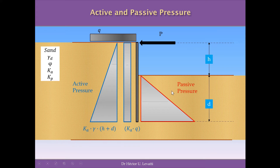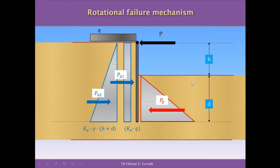Remember, we have two types of passive pressure: we have the passive pressure in equilibrium, and we have the maximum passive pressure that the soil can develop because of its properties. So, we need the forces at the centers of every diagram. We need the force Pa2 at the center of this triangle in blue. We need Pa1 at the center of this rectangle, which is the resultant force of the pressure of Q. And we need the location of the center of this triangle in red for the passive pressure.